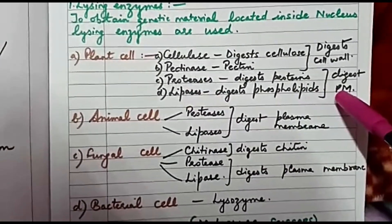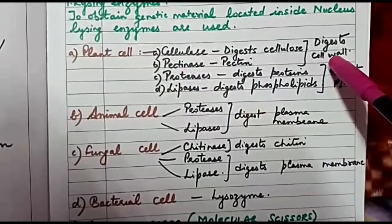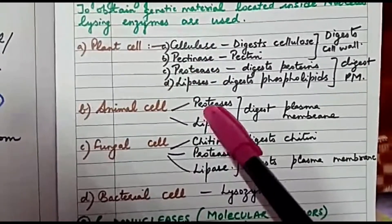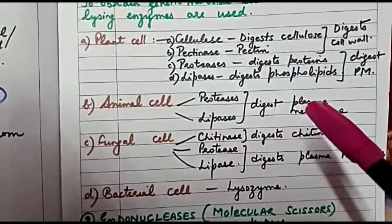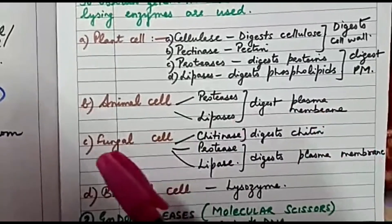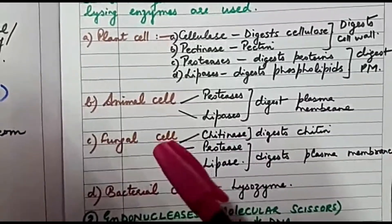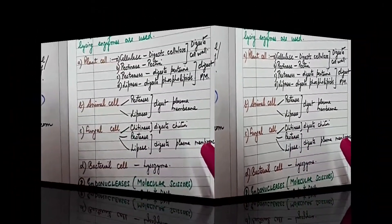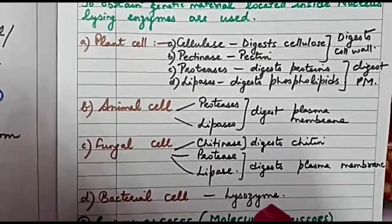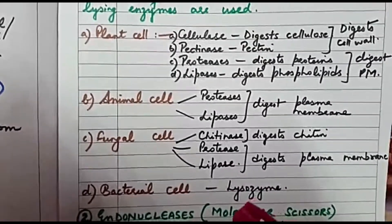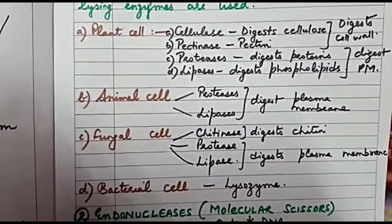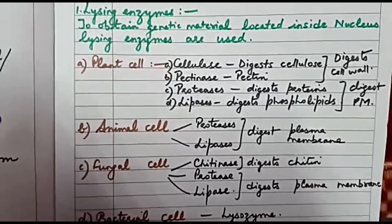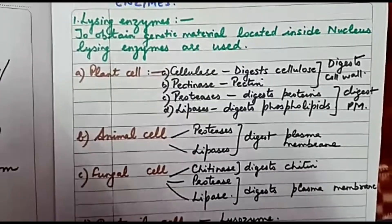In animal cells, there is no cell wall, so cellulase or pectinase are not needed — proteases and lipases simply digest the plasma membrane. For fungal cells, which are made up of chitin, the enzyme chitinase digests the chitin, along with proteases and lipases for the plasma membrane. In bacterial cells, we have the enzyme lysozyme, which digests the bacterial cell wall made up of peptidoglycan. The remaining enzymes, vectors, and hosts will be discussed in the next video.